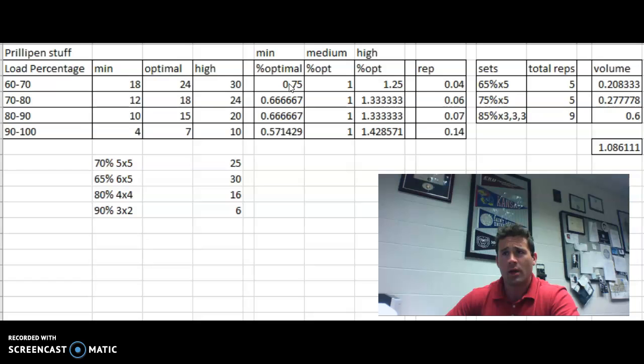Meanwhile, if we then look at a six-by-five at 65%, 30 total reps, high-end again. Or a four-by-four at 80%, we're pretty close to being optimal where we want to be there. We're getting 16 total reps in. And then when we look at just doing three doubles at 90%, we're on the low end of optimal, but that's still a lot of loading and a lot of sets. But in reality, we're going to have our athletes warm up.